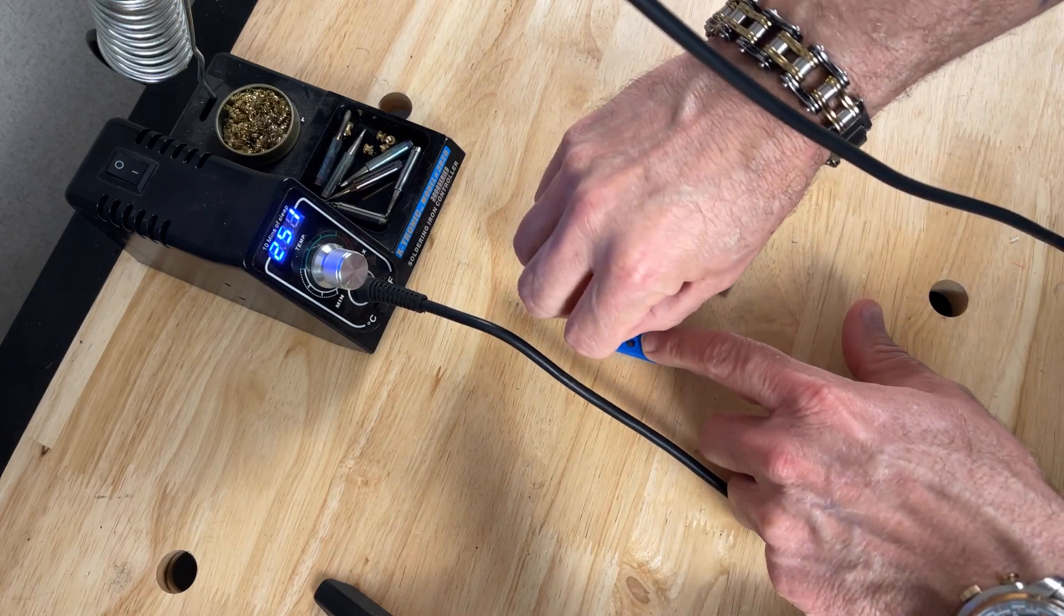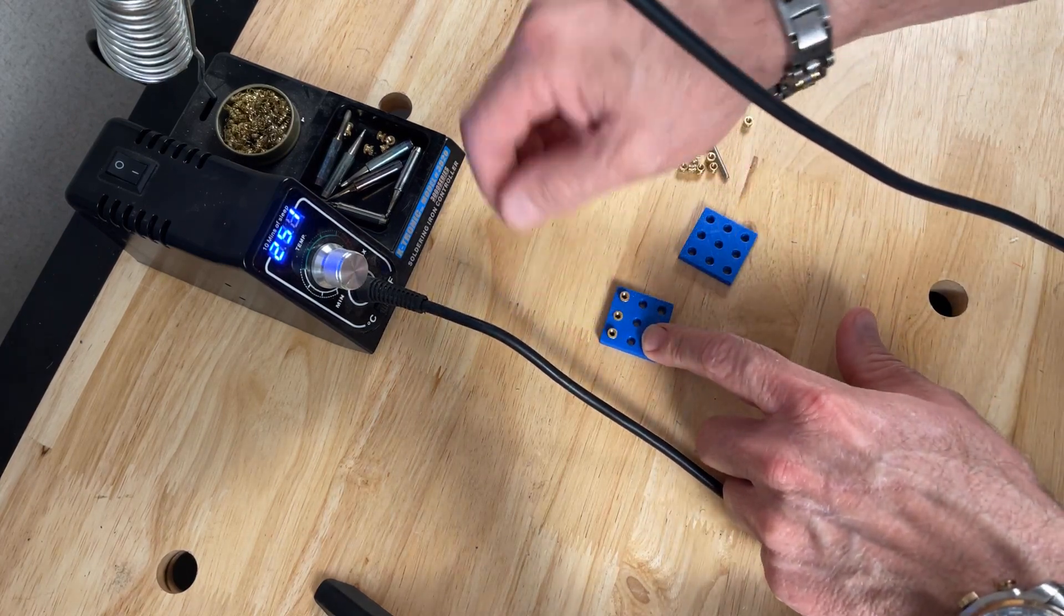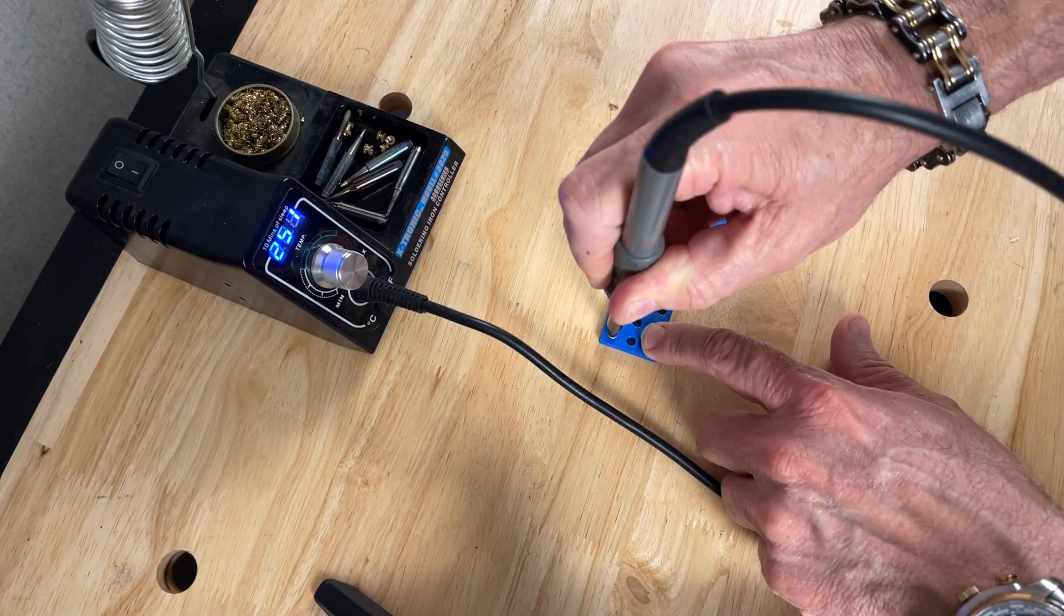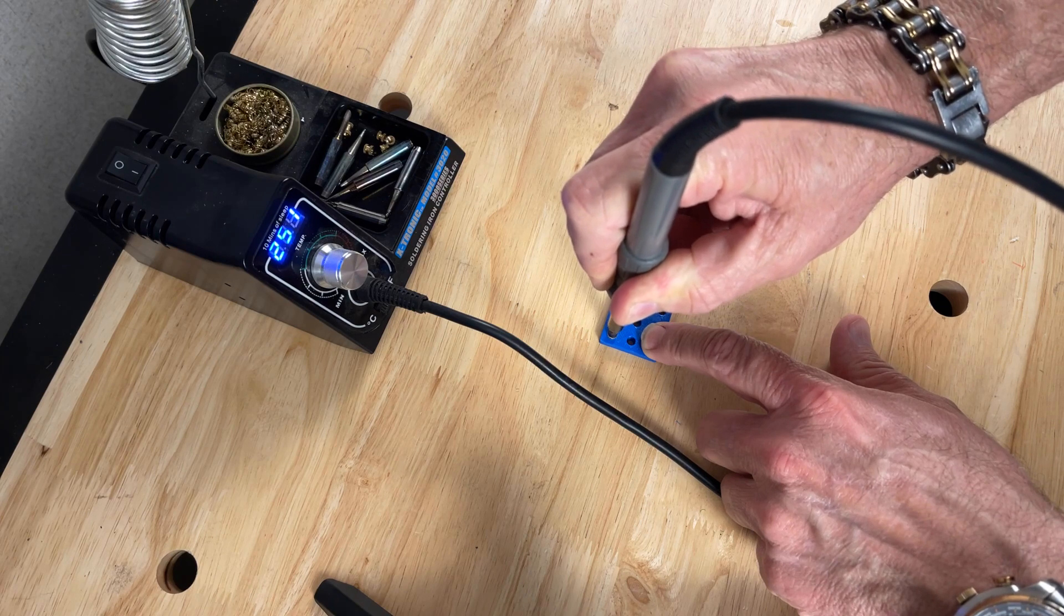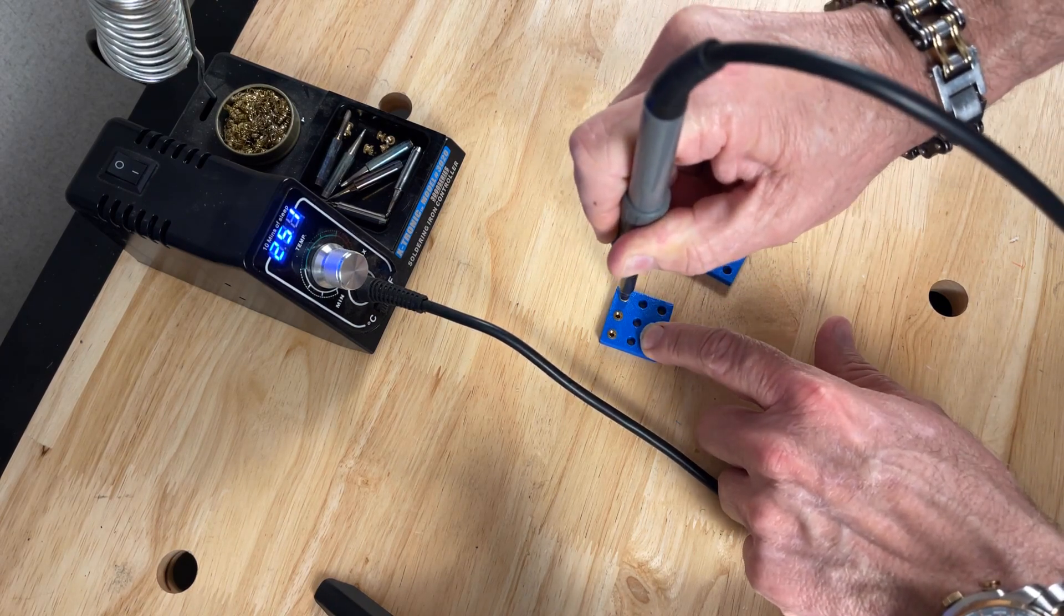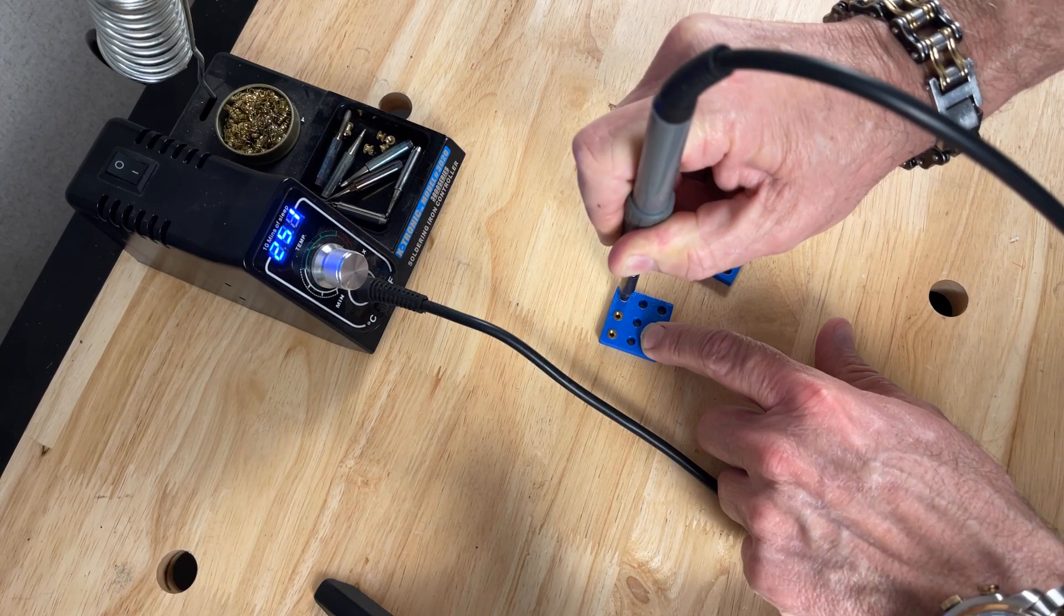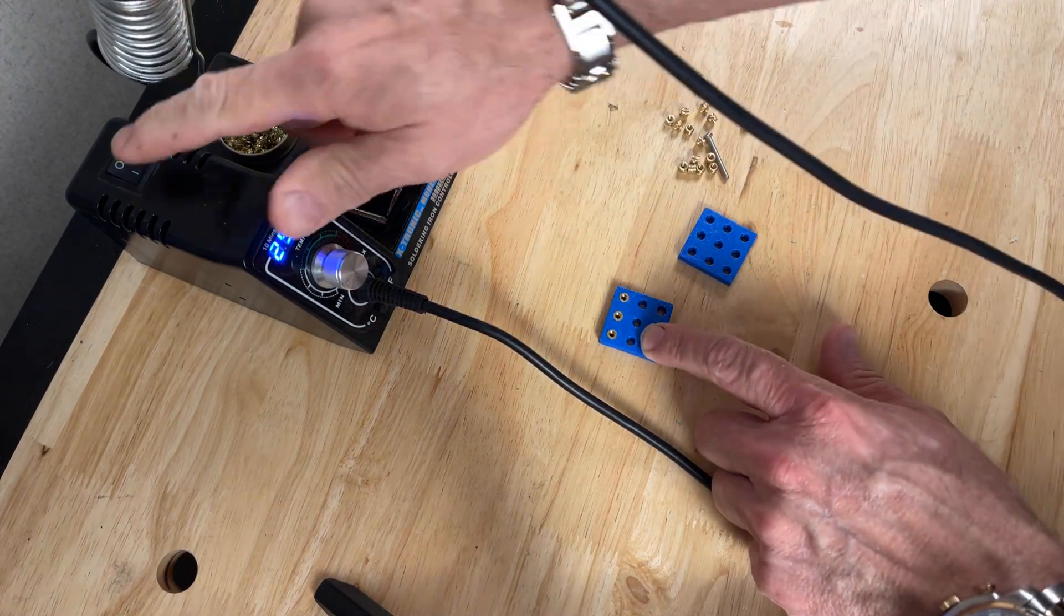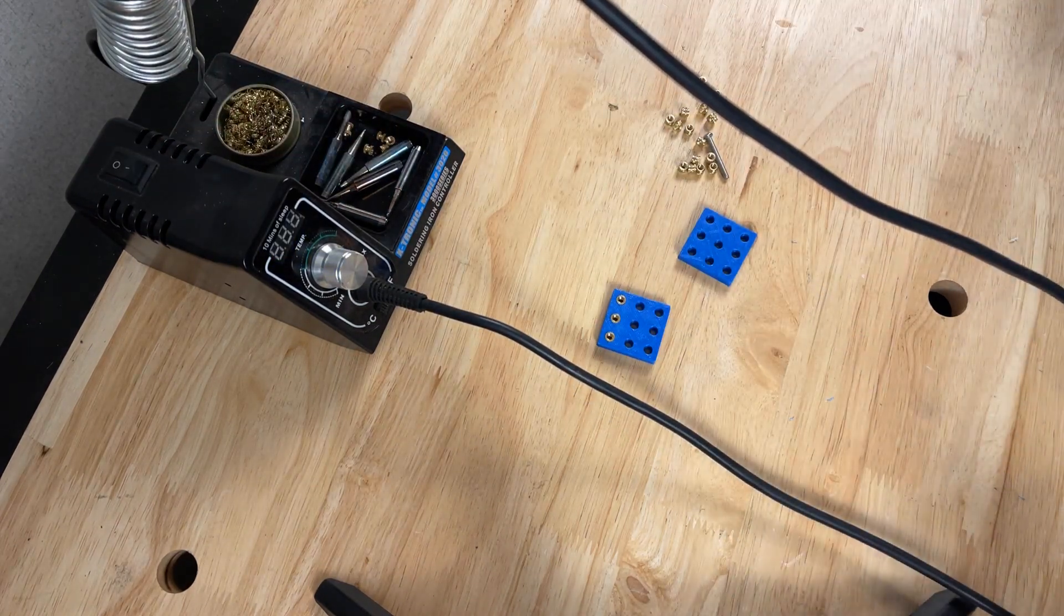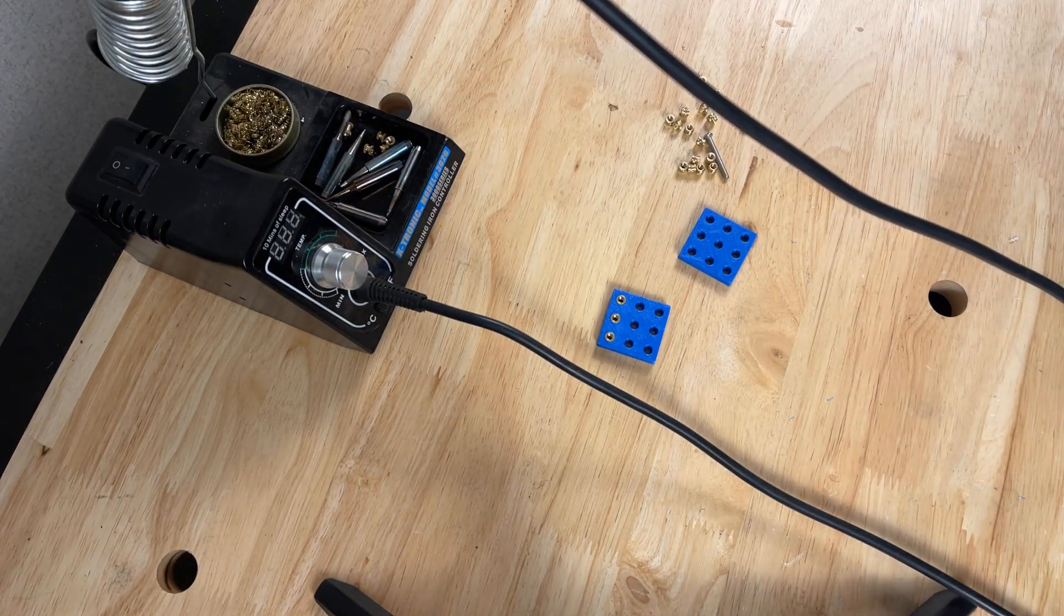Set them in there like that to get them started. Take the soldering iron, press it in there, press down till it sets flush. Now give me just a minute here, I'll change out the tip on there, and I'll show you doing it with the regular tip.